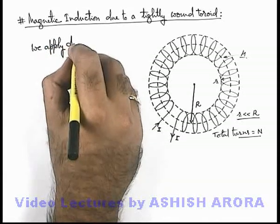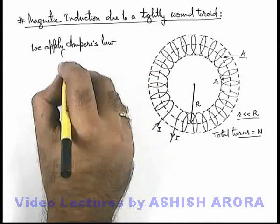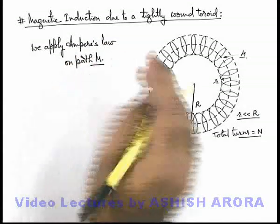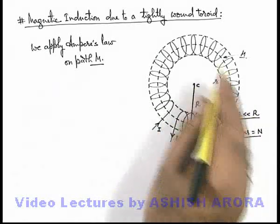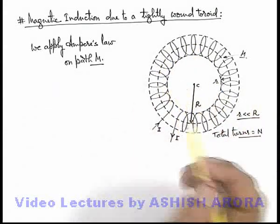Ampere's law on path M. You can consider any path which is a concentric circle with respect to the center of the toroid; any other concentric circle can also be chosen.